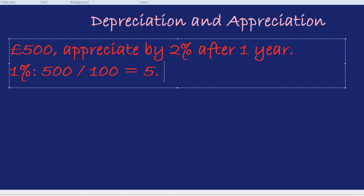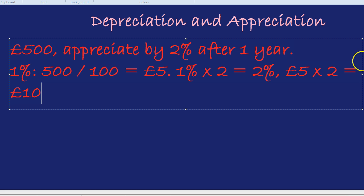1% times by 2 equals 2%. So £5, in this case, times by 2 is going to be £10. That means we will have £10 more than we started with, which equals £510. Our amount has appreciated by 2%, bringing it to £510. We now fully understand and appreciate its full value.